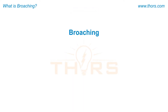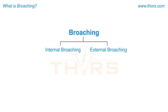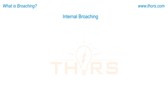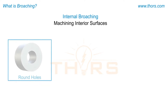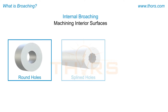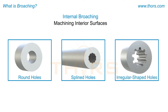Broaching operations can be classified as internal broaching and external broaching, also known as surface broaching, based on the machining surface of the workpiece. Internal broaching is used for machining interior surfaces such as round holes, splined holes, and irregular shaped holes.